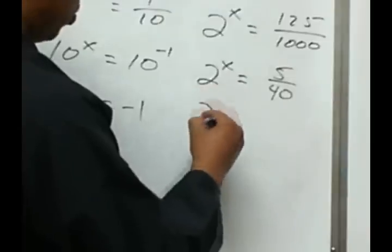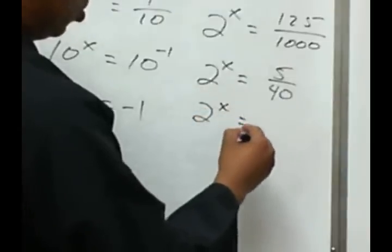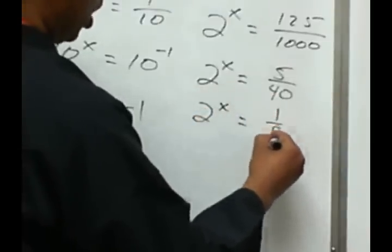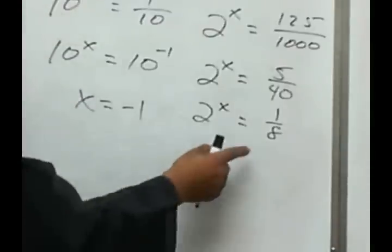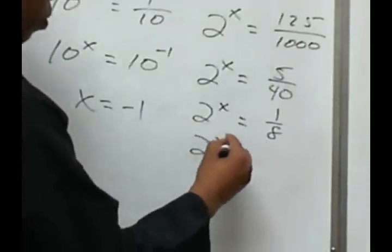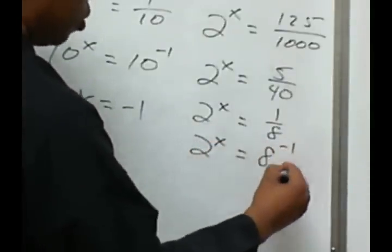And, that will still simplify into 1/8. Okay. And, I take the reciprocal of my 1/8. And, I'll get 8 to the negative 1 power.